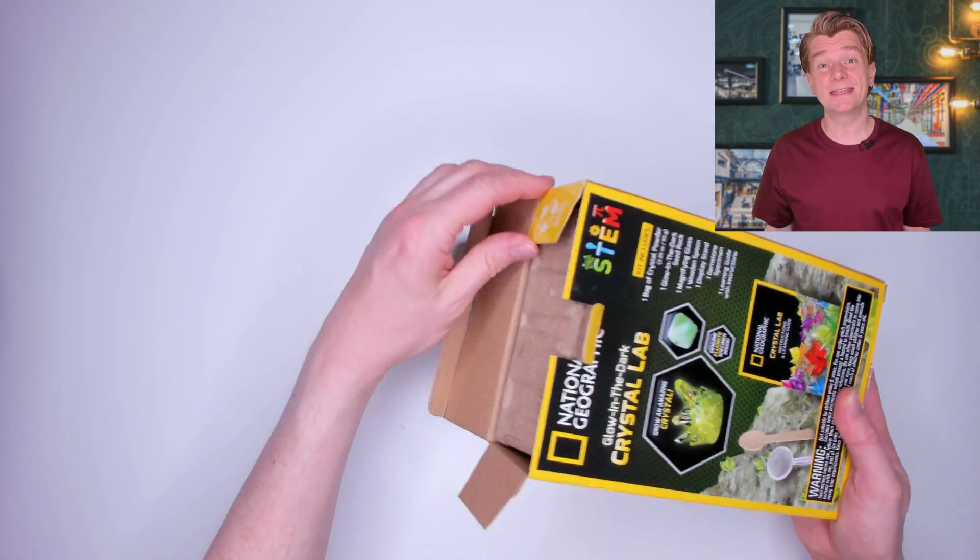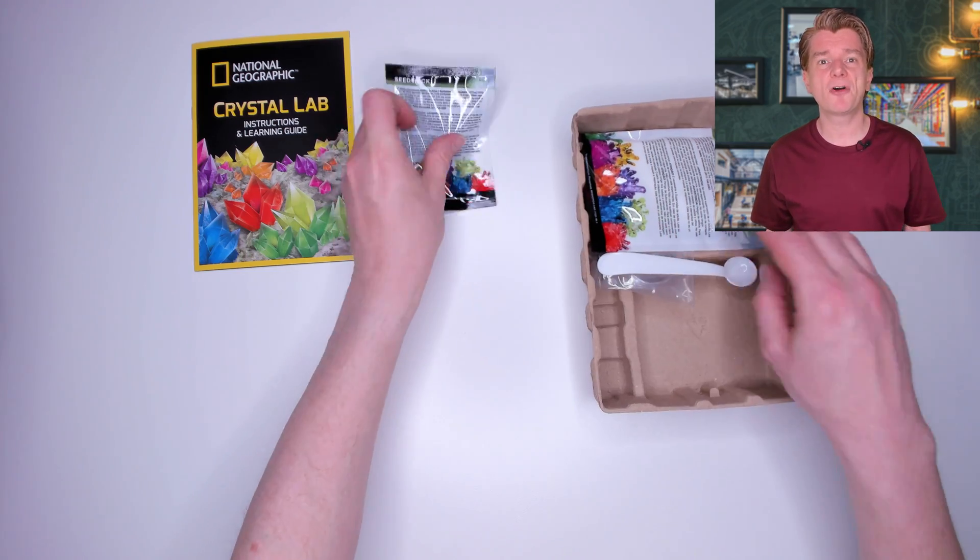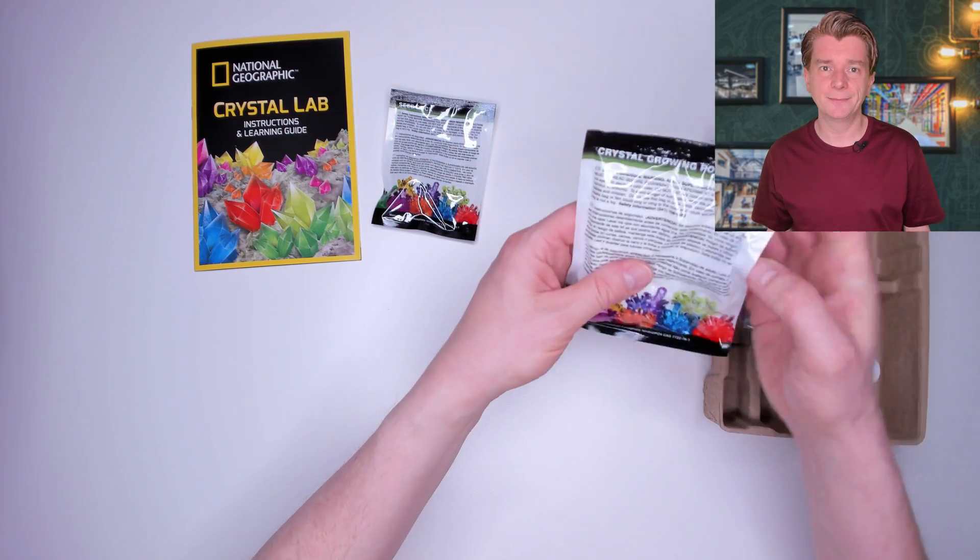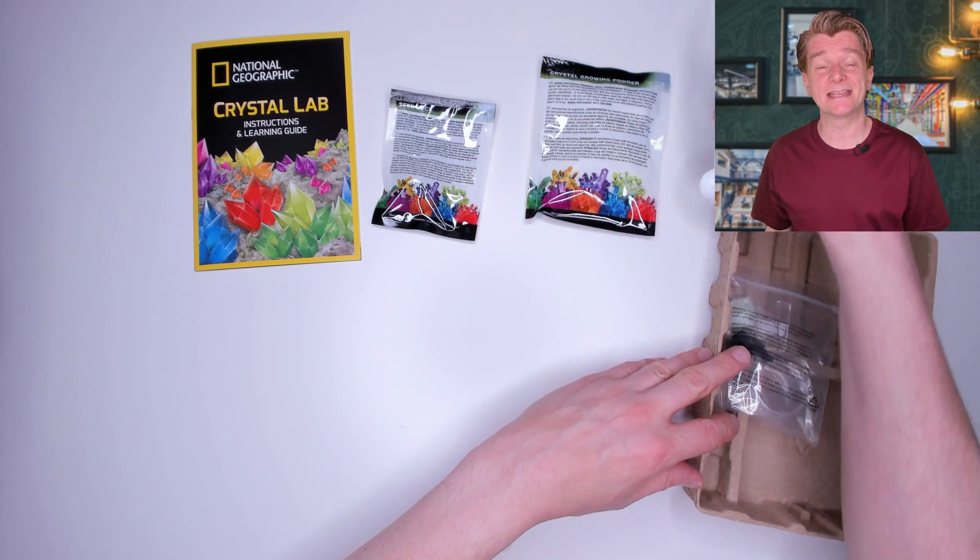Let's open it up. Inside is the usual cardboard tray which contains the crystal lab book, a seed rock, some crystal forming powder. There's a plastic spoon stirrer and a little bag that contains the fluorite specimen.